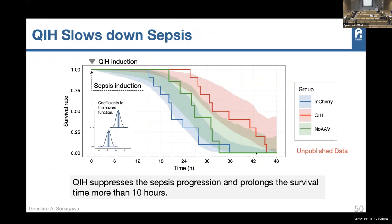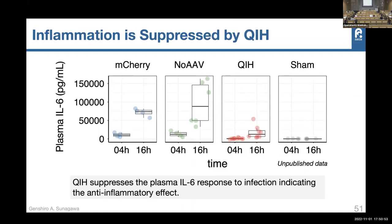Almost all mice are dead before 40 hours in the control group. If you induce QIH, you can see a clear rightward shift of the survival curve — meaning QIH simply inducing makes the mice much more likely to survive. Looking at inflammation markers in the blood, IL-6 concentration usually jumps up within 16 hours in sepsis, but in QIH it does not go as high — so QIH appears to be suppressing the sepsis inflammation.